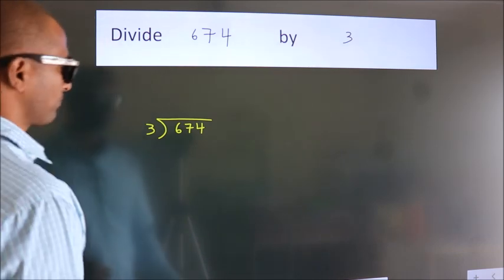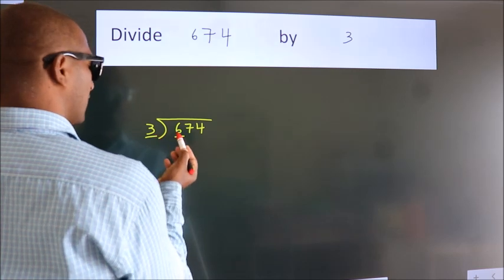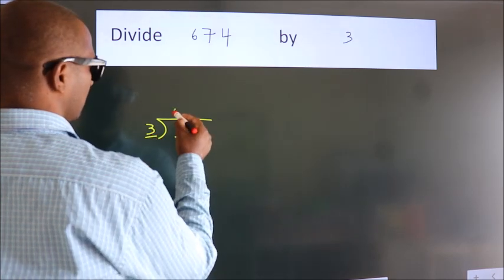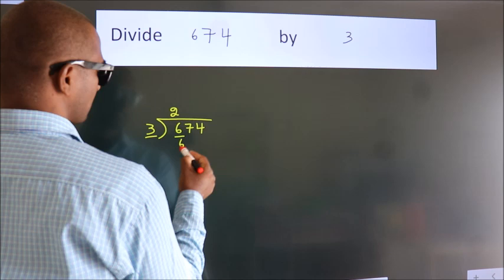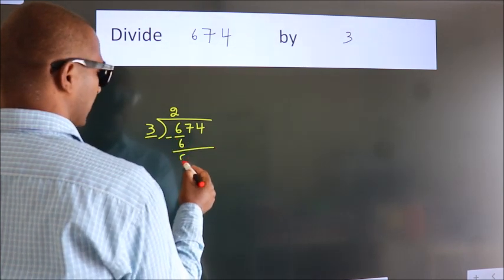Next, here we have 6, here 3. When do we get 6? In 3 table: 3 times 2 is 6. Now we should subtract. We get 0.